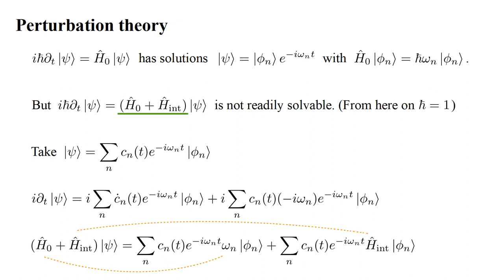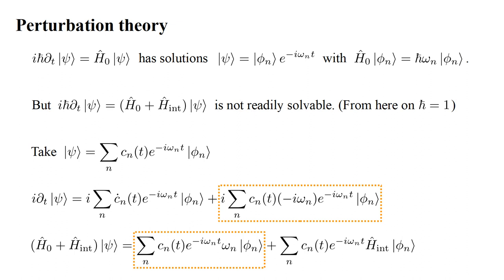The right side of the equation, we break into a sum of H-hat-zero and H-hat-interaction terms. The H-hat-zero operator simply adds a factor omega-n to each term in its sum. The H-hat-interaction operator operates on the stationary states phi-n in its sum. Since i times minus i is just one, the two box expressions are equal and they cancel.